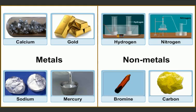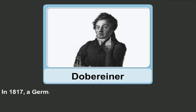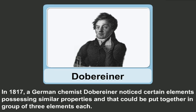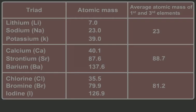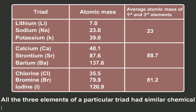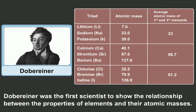Dobereiner's Triads. In earlier attempts, elements were classified on the basis of their properties, and elements having similar properties were placed in one group. In 1817, a German chemist Dobereiner noticed certain elements possessing similar properties that could be put together in a group of three elements each. These groups of three elements were called Triads. All three elements of a particular triad had similar chemical properties. Dobereiner was the first scientist to show the relationship between the properties of elements and their atomic masses.